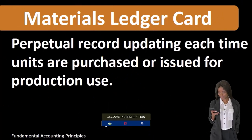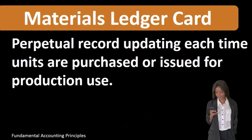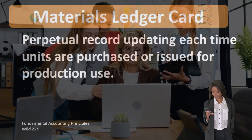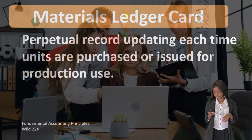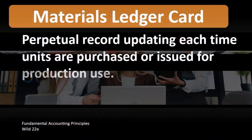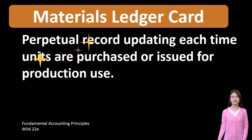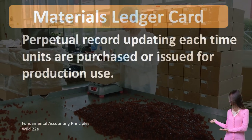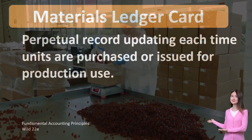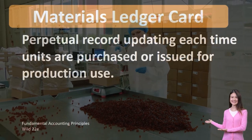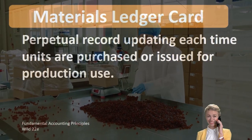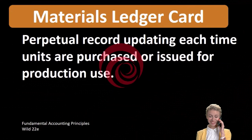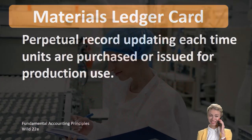The materials ledger card deals with the tracking of raw materials at the beginning of the production process. Much like a supplies account, we need to track the materials as we purchase them, and then track them as they are transferred from raw materials to either work in process or factory overhead.